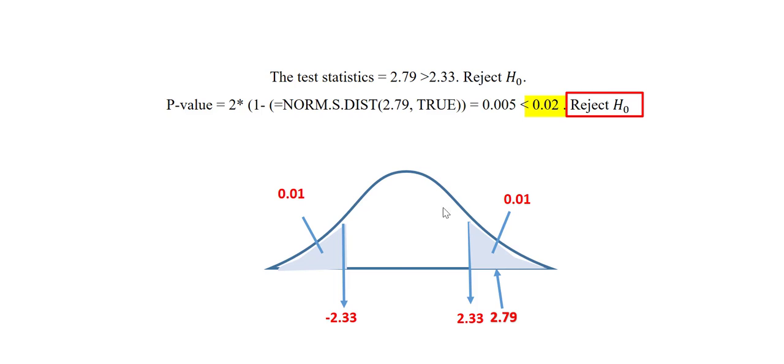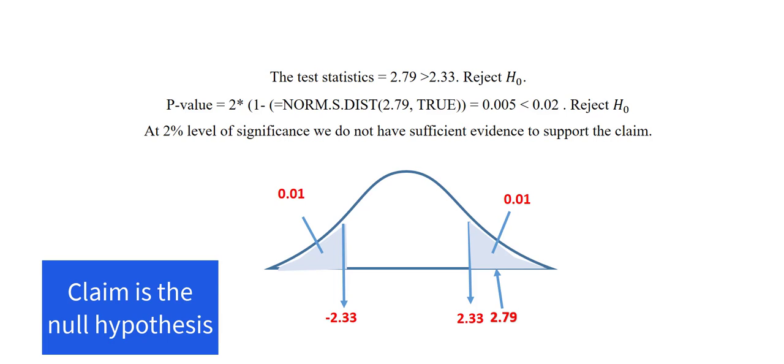We can thus conclude that at 2% level of significance we do not have sufficient evidence to support the claim since the claim is the null hypothesis. Next we proceed to find the 98% confidence interval for the population mean.